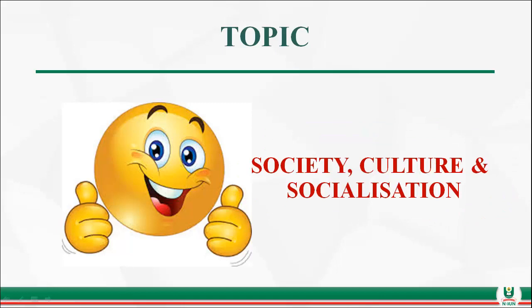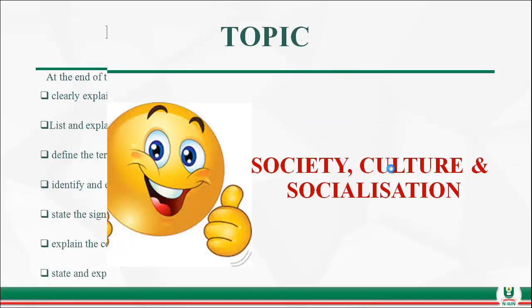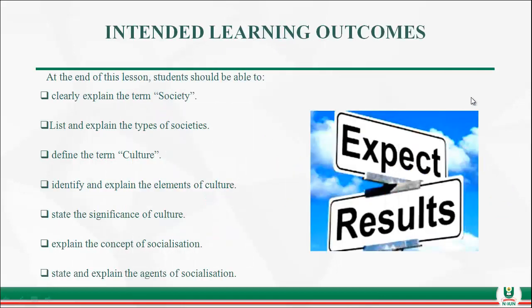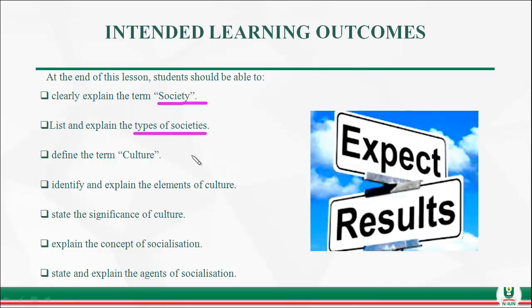So what are the intended learning outcomes? What should be your takeaway after this lesson? It is expected that by the end of this lesson, you should be able to explain the term society, and also list and explain the types of societies. There are different types of societies that this lesson will expose you to.